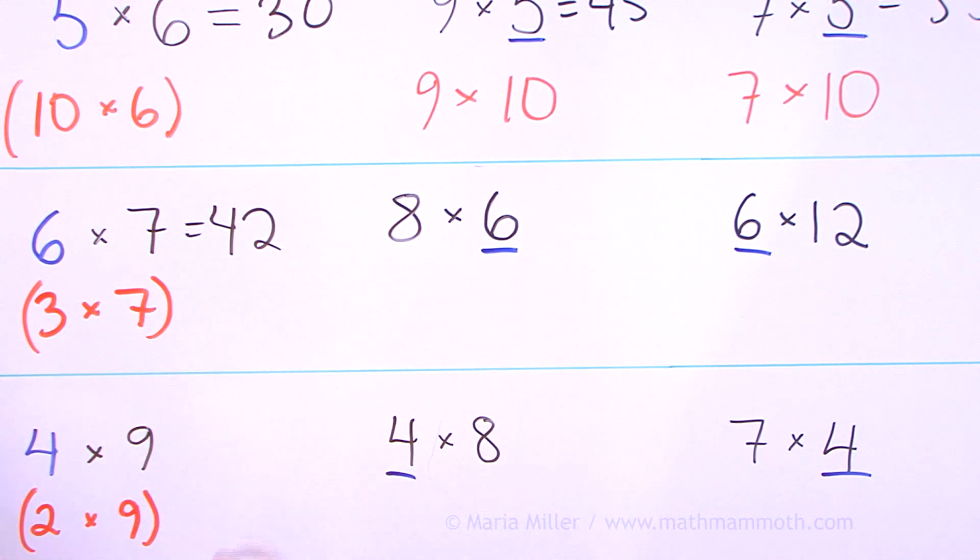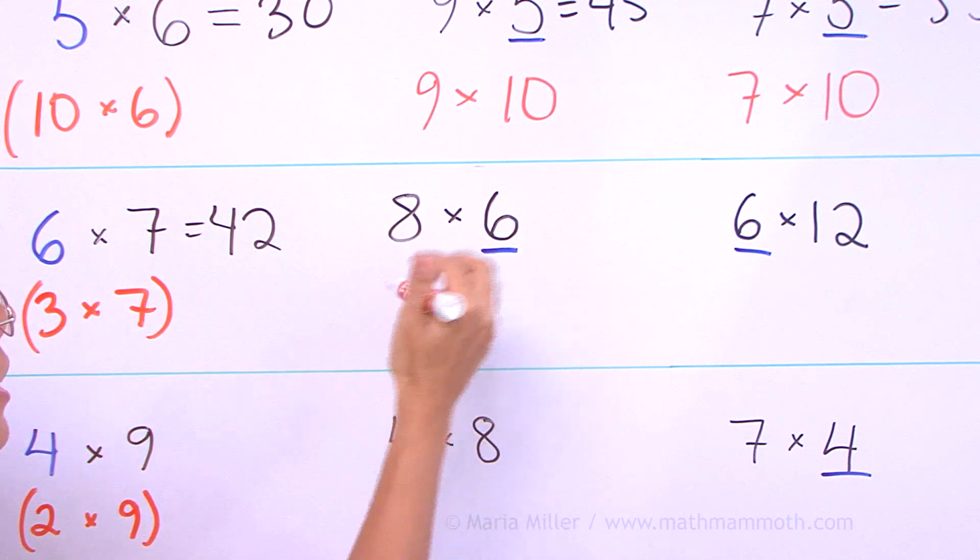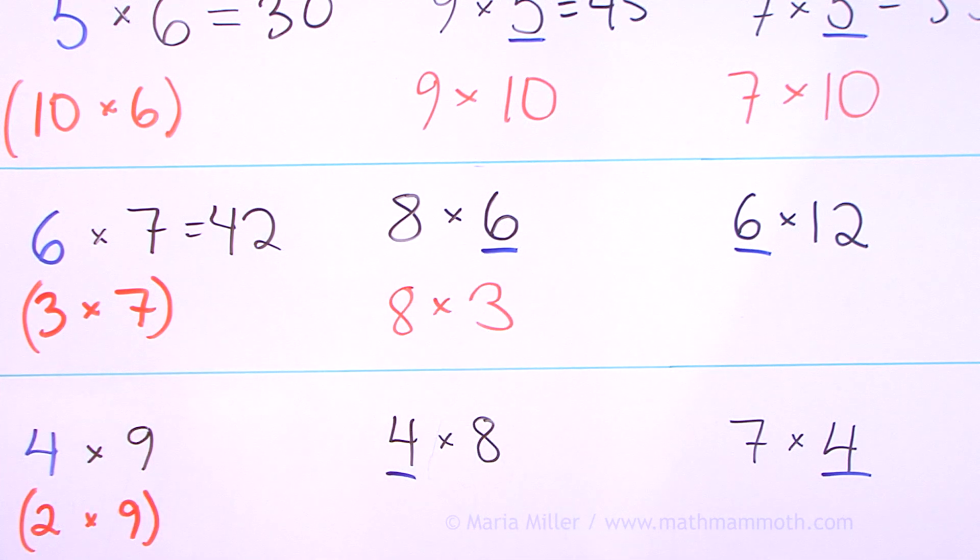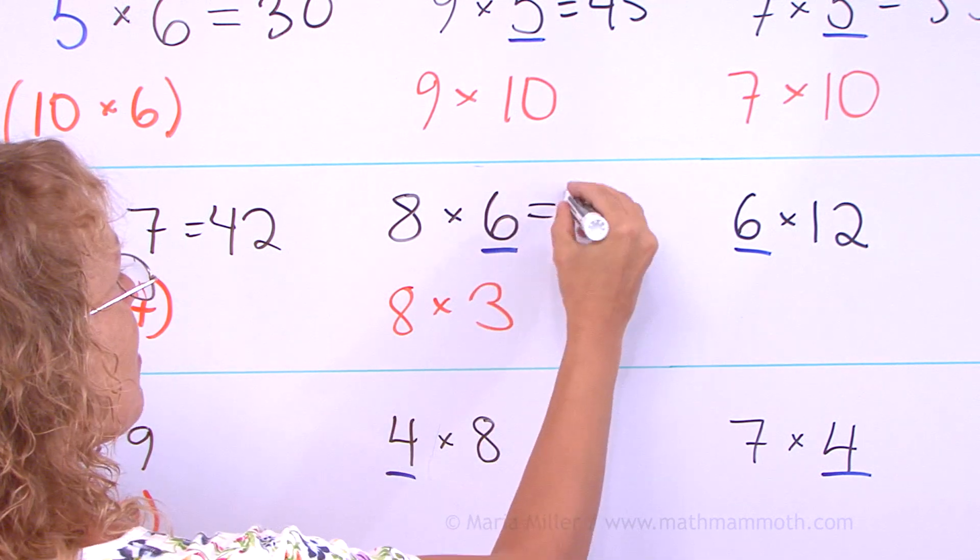8 times 6. Instead of 6, put there 3. 8 times 3, 24. So this is double that, 48.